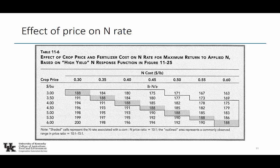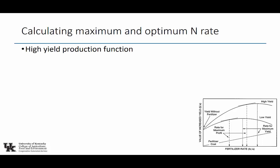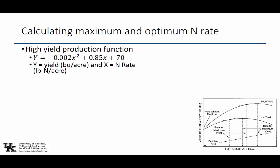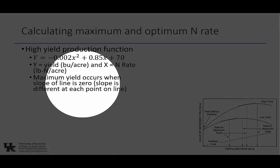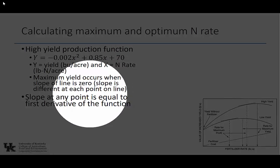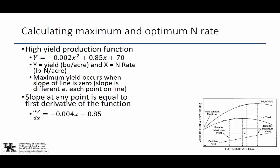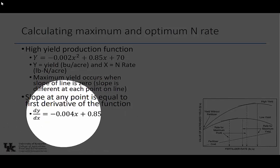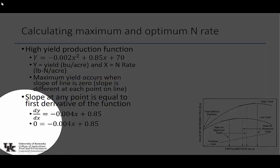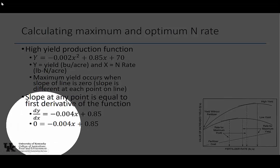We can calculate the maximum and optimum nitrogen rate. Looking at the high-yield function Y = −0.002X² + 0.85X + 70, where Y is yield in bushels per acre and X is nitrogen rate: the maximum yield occurs when the slope of the line is zero, and the slope is different at each point on the line. The slope at any point equals the first derivative of the function. The first derivative is −0.004X + 0.85. Setting it equal to zero, X = 212 pounds of nitrogen per acre — that's maximum yield for the high-yielding field.